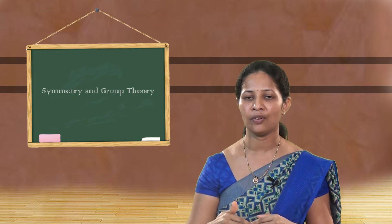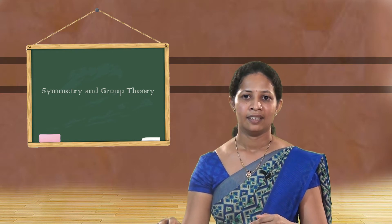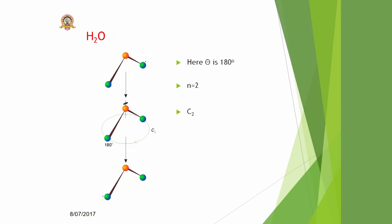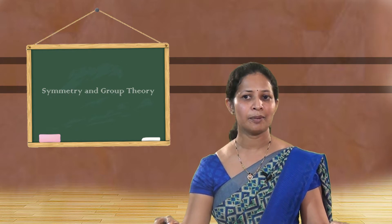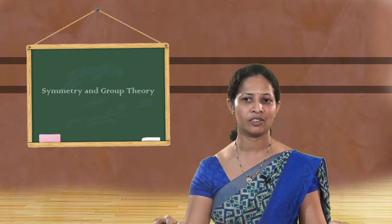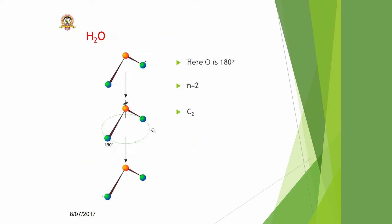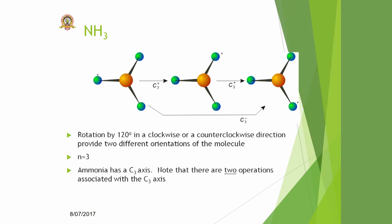Let us consider the example of the water molecule. The water molecule has three atoms: one oxygen and two hydrogen atoms attached in a bent structure. By definition, the axis of symmetry is an imaginary axis through the molecule about which the molecule can be rotated by a minimum angle to get an indistinguishable configuration. Here, the axis can be passed through the oxygen atom, and the minimum rotation required is 180 degrees. So N = 360 / 180 = 2, meaning water has a C2 axis of symmetry.